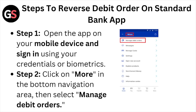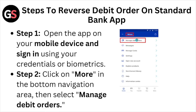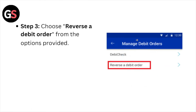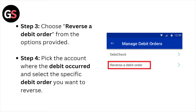Step number two: click on 'More' in the bottom navigation area and then select 'Manage Debit Orders'. Step number three: choose 'Reverse a Debit Order' from the options provided.